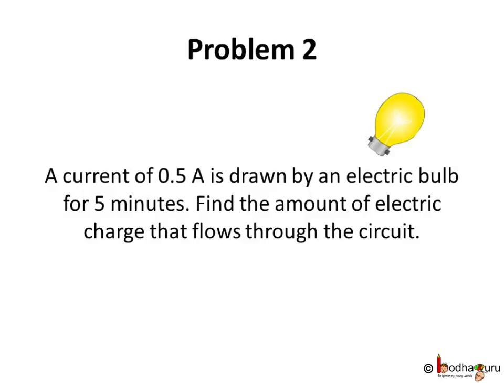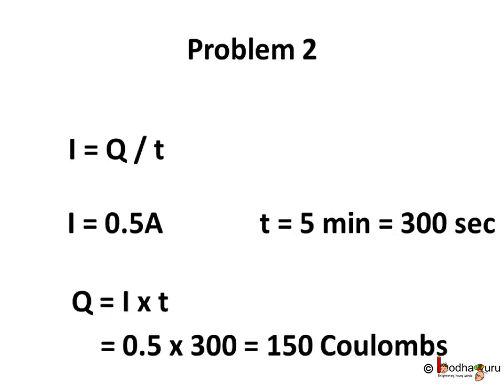We know I equal to Q by T. We are given I equals 0.5 amp and time T is given as 5 minutes. Let us convert it into seconds which is 300 seconds and we need to find Q. So Q equals I into T which is equal to 0.5 into 300. Simplification we get 150 coulombs. So 150 coulombs of electric charge is passing through the bulb filament.